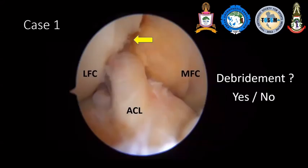But arthroscopic visualization shows something like this — an ACL stump there, just only some missing soft tissue. Will we debride or remove the stump? I will have the solution in this case, my case, in the final.